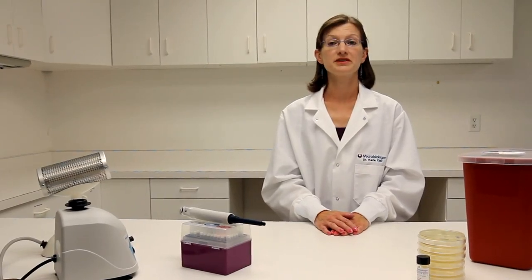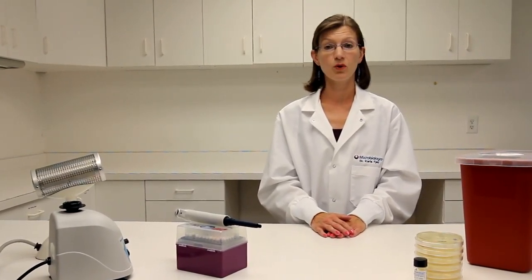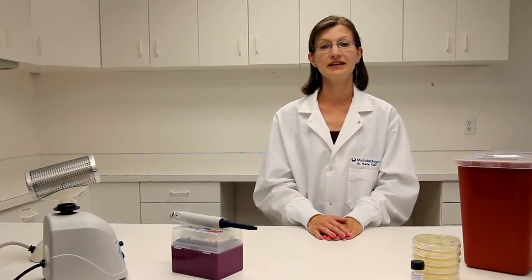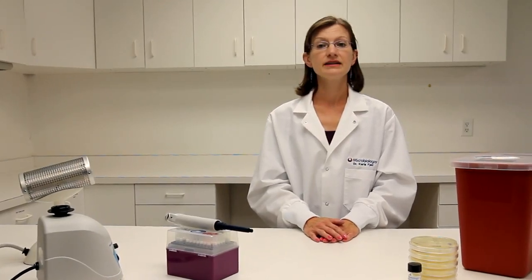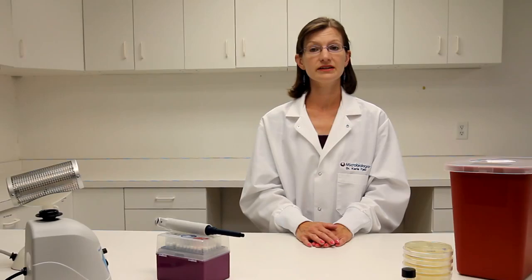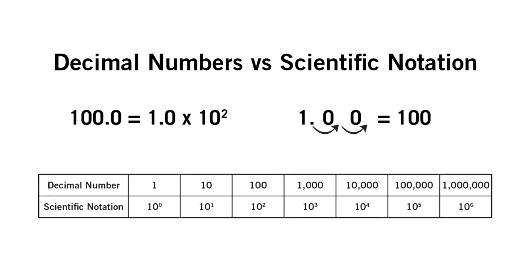Before we can move on to multiple dilutions, it is important to understand decimal numbers and scientific notation. Decimal numbers can be converted to scientific notation by moving the decimal place the same number of places as the exponential number. In this example, if we start with 100 and move the decimal two places to the left, the final result will be 1.0 times 10 to the second.